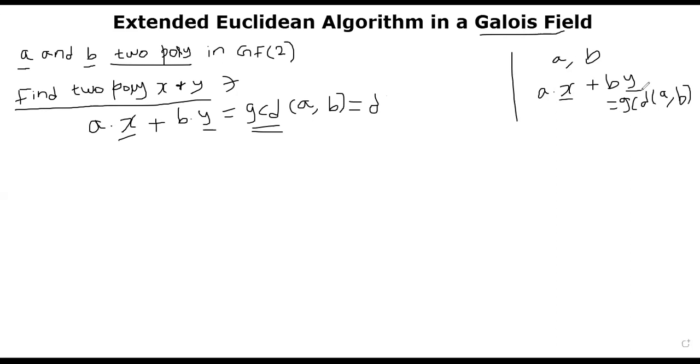Only difference is that our multiplication will be done in Galois field, our remainder operation instead of regular mod, we will be using the Galois field remainder that I have talked about in the previous segment.